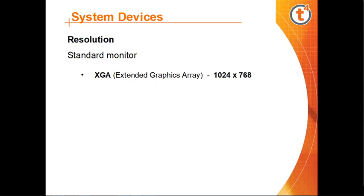Additionally, more viewable content can fit onto a higher resolution computer screen than a lower resolution screen. Pixels, or picture elements, are the smallest physical points on a display and are the building blocks of any image you see on your screen. Pixel and resolution are directly correlated — a higher resolution equals a higher number of pixels on the monitor screen.